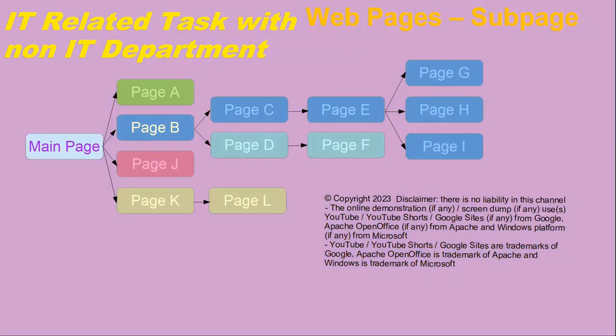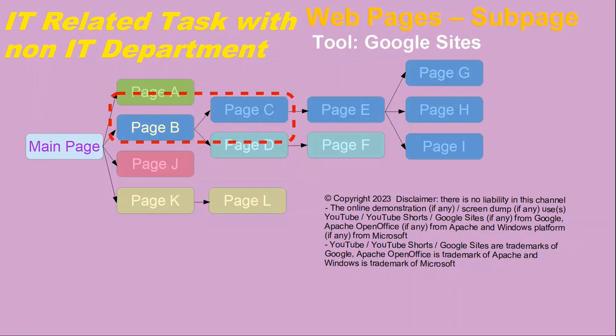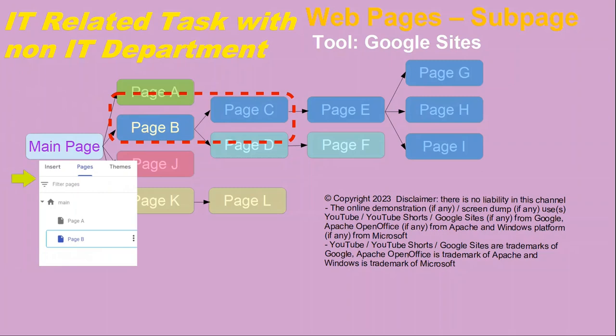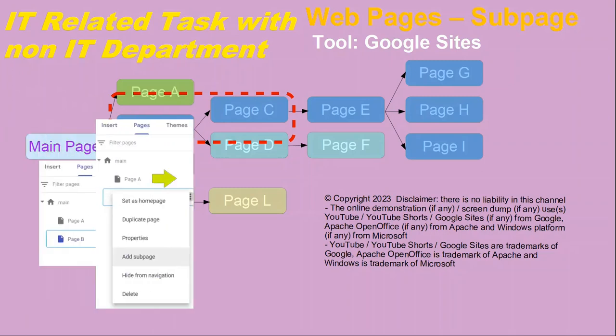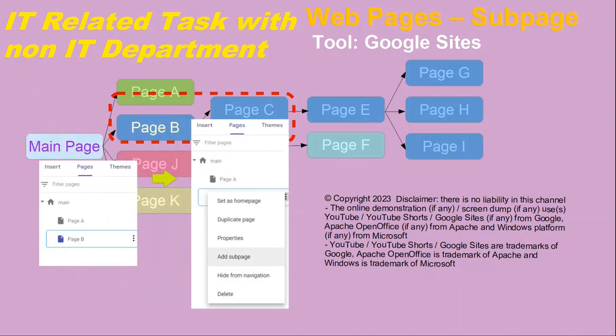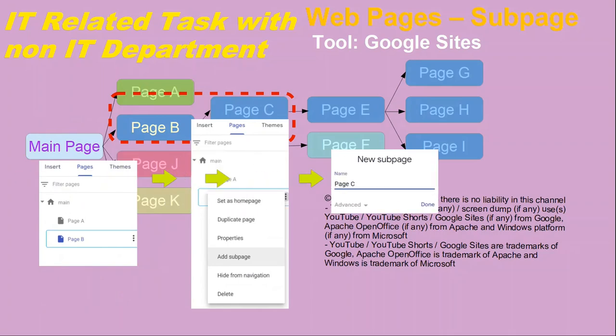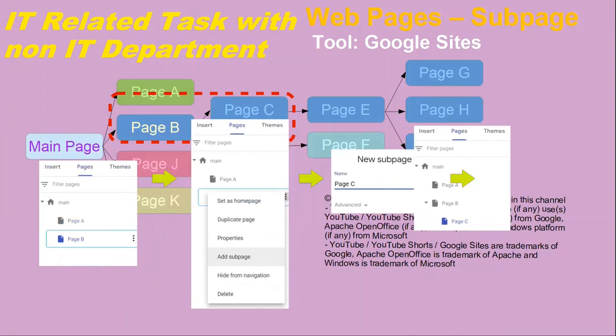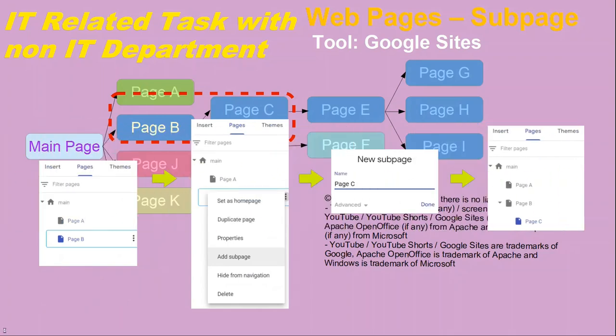For subpages in Google Sites, consider web pages B and C. At web page B, click the three dots and choose 'Add Subpage.' Enter the subpage name. Web page C will then be at the next level under web page B.